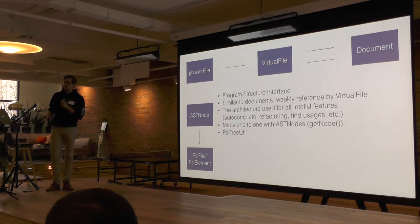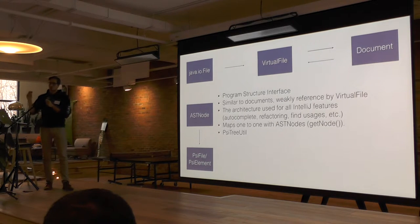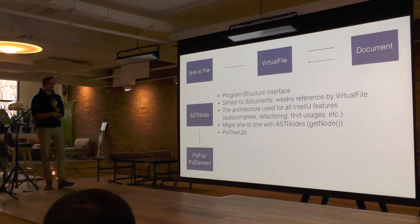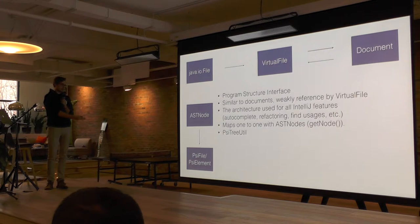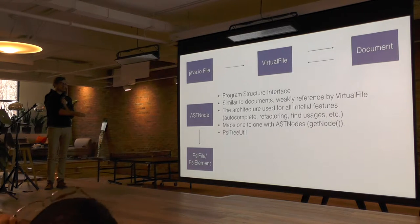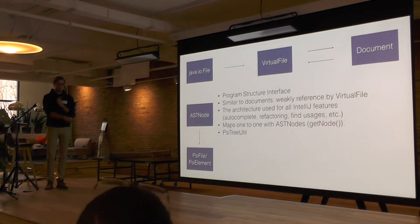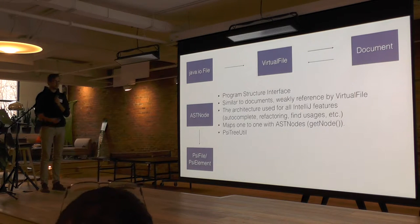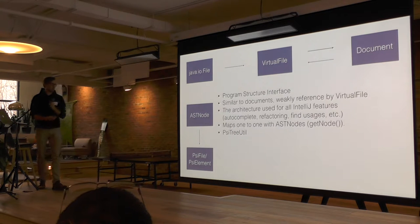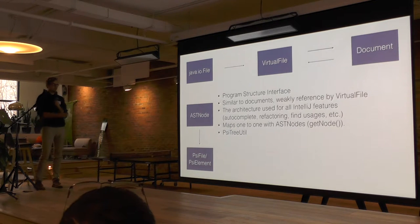If you command-click on an element, all it's doing is calling resolve on that PSI element and bringing you to the source. PSI elements map one-to-one with AST nodes — this is the big architecture that I'll be talking about most of this presentation, and it's what powers Lint. If you're writing an IntelliJ plugin, it's mostly what you'll be working with.